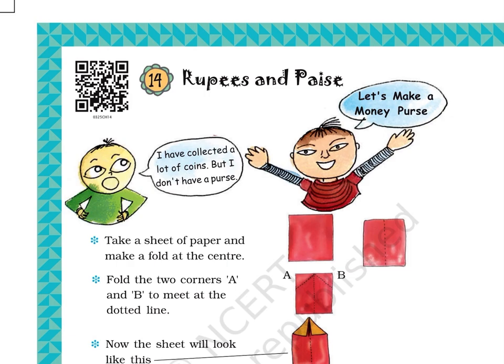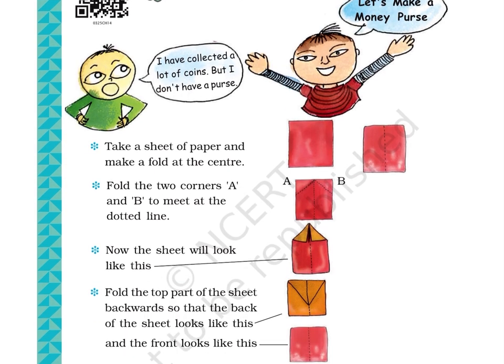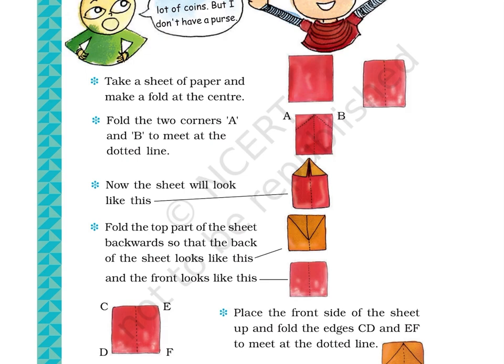Step 2: Fold the two corners A and B to meet at the dotted line. The picture at the right-hand side shows the corners A and B marked at the top left and right corners of the paper respectively. There is a dotted vertical line at the center made in Step 1.